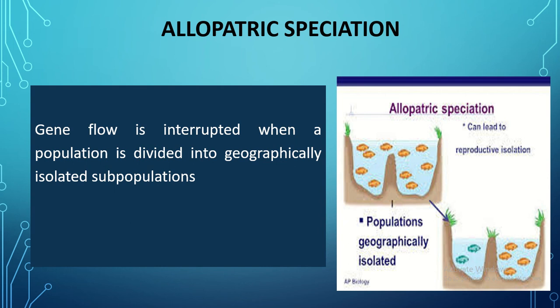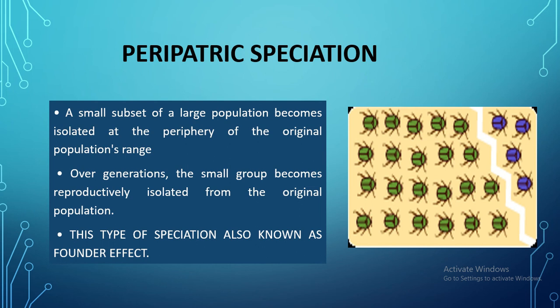Peripatric speciation occurs when a small subset of a large population becomes isolated at the border or periphery of the original population's range. Over different generations, the small group becomes reproductively isolated from the parent population. As shown in the image, all organisms were once the same green species, but a small subset became reproductively isolated and evolved into a new species. This is peripatric speciation — a peripheral subset that isolates and evolves independently.